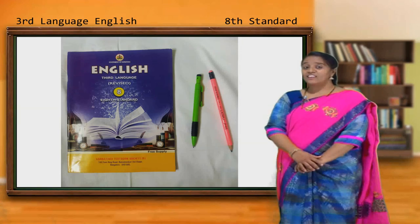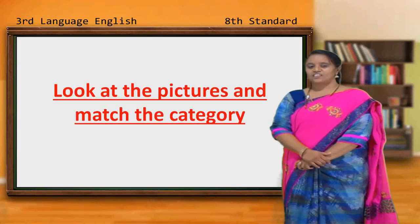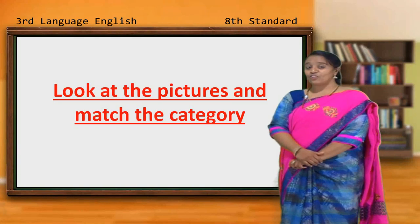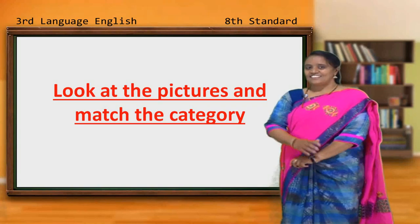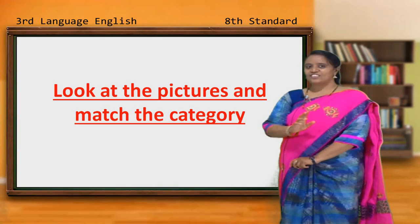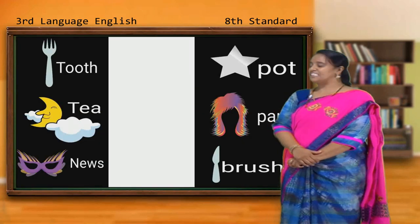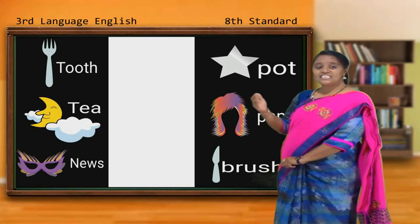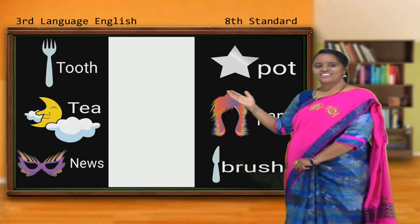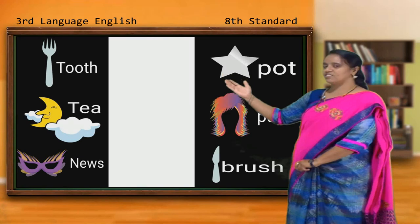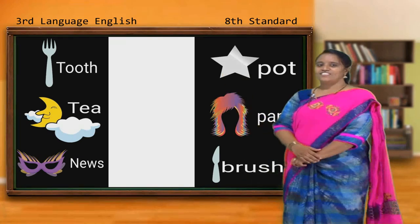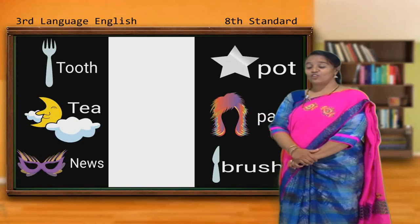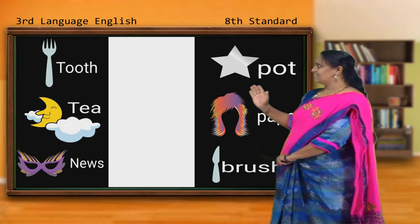Now, here is an activity for you. You have to look at the pictures and match the category. Focus on the pictures. The pictures of the same category have been given for you. You have to look at these pictures and match them. You can see: fork, moon, mask, pot, wick, knife. You have to match according to the categories. You can also focus on the words given with the pictures.